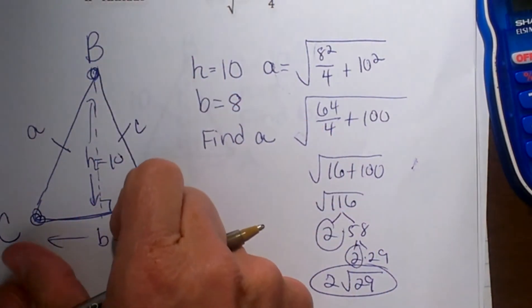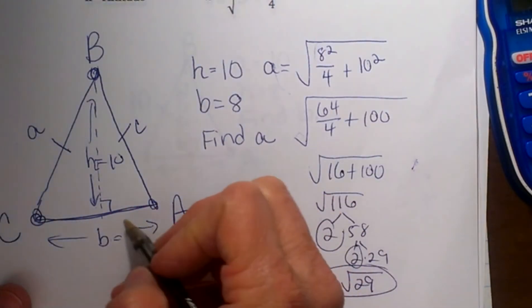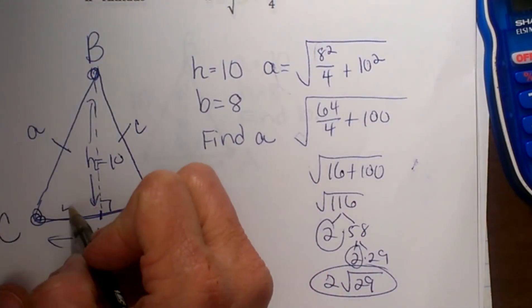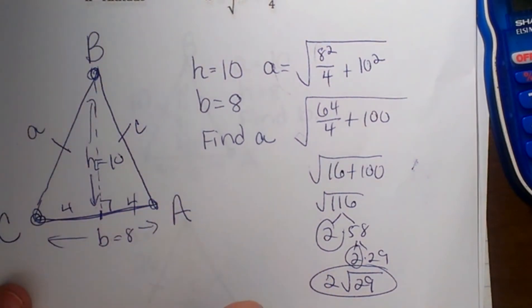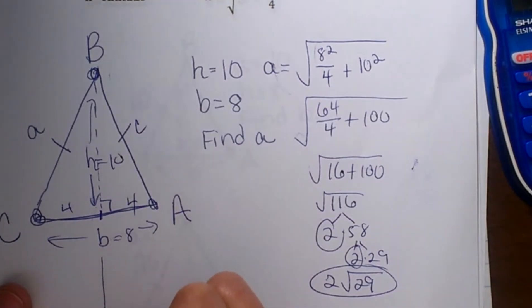I know this altitude cuts the base in half. So if this base is 8, I can cut it in half to make it 4 on this side and 4 on this side. Then I can isolate this little right triangle right here.